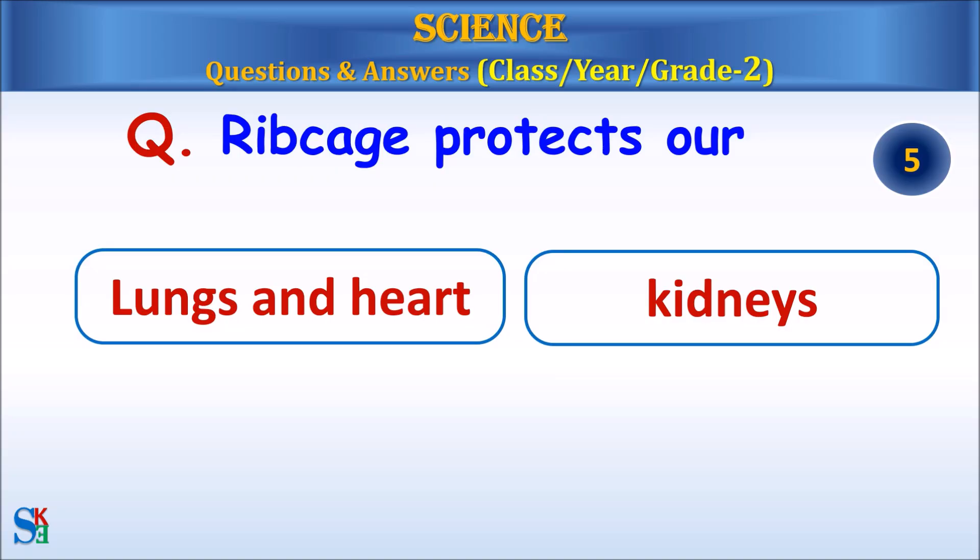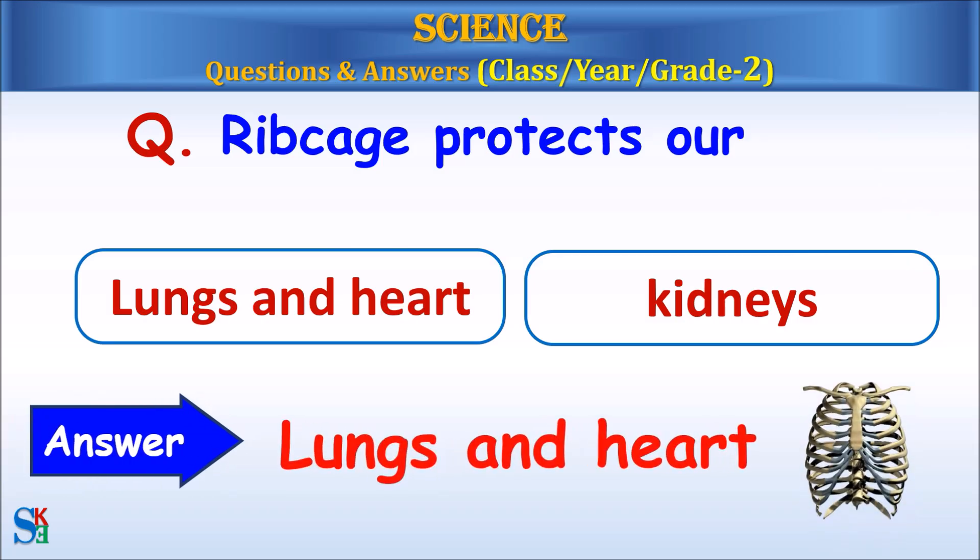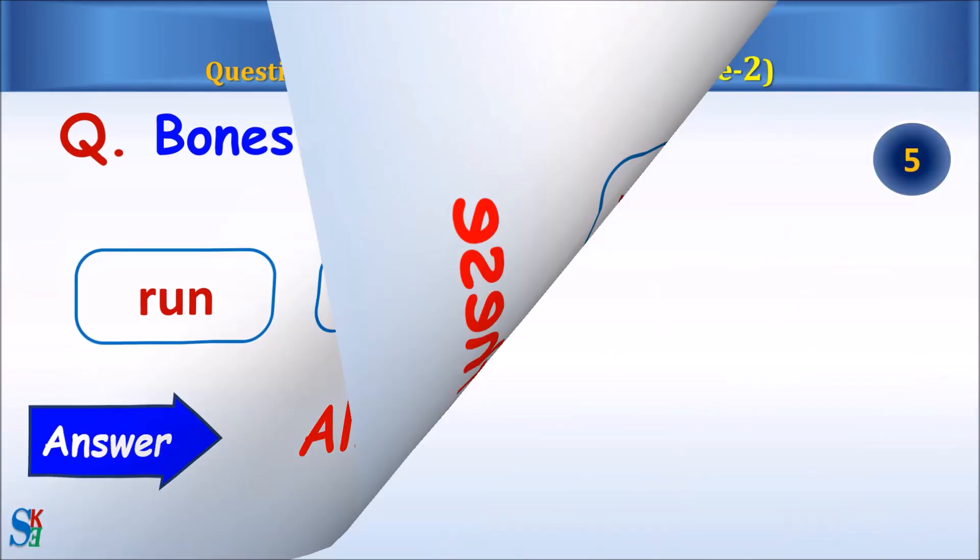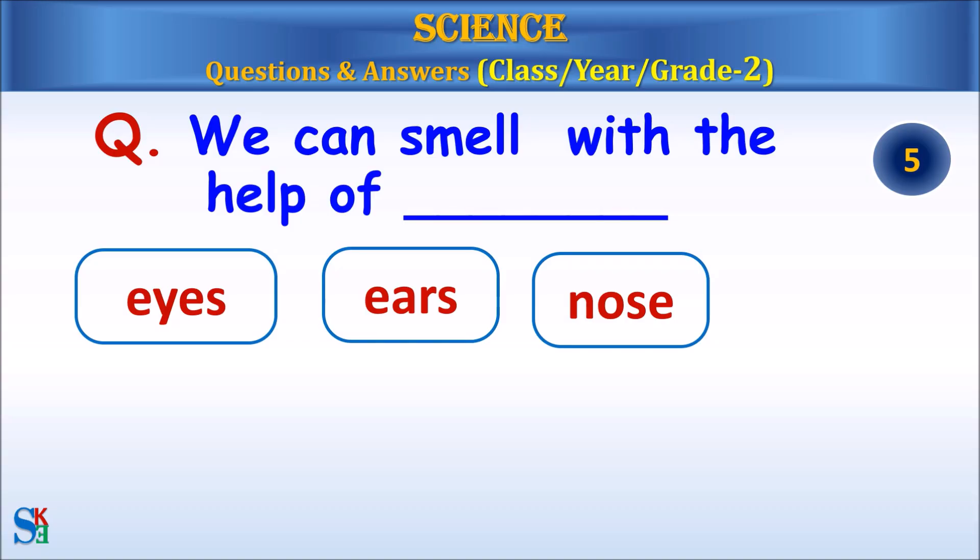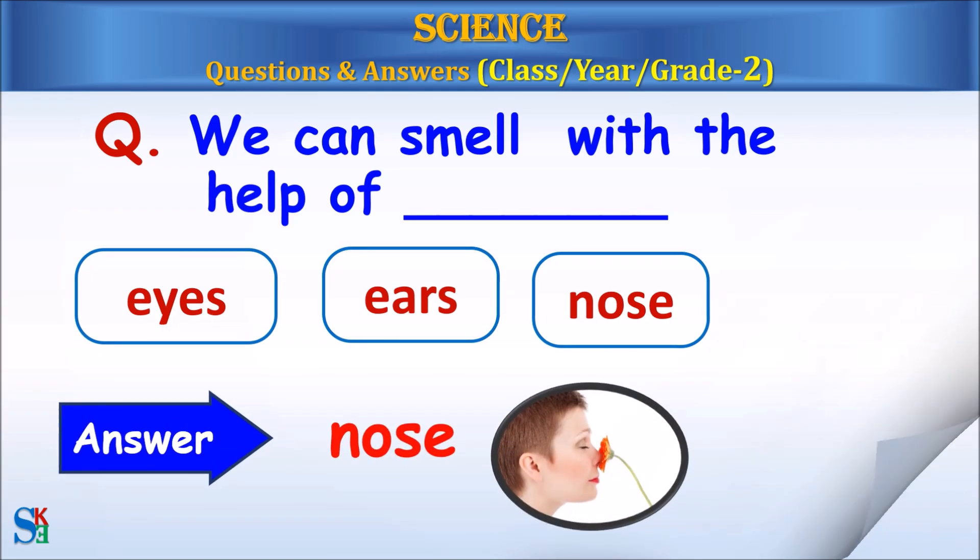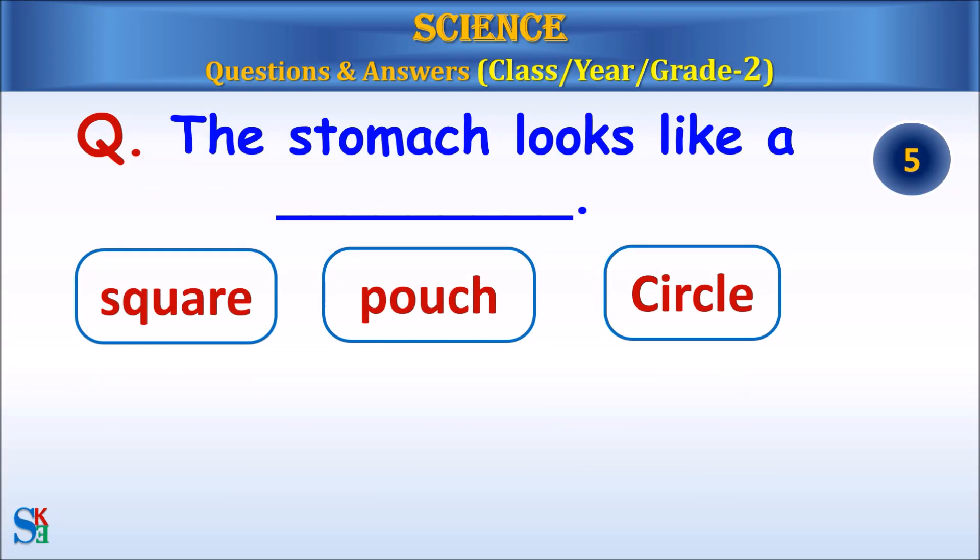Rib cage protects our lungs and heart or kidneys. Answer, lungs and heart. Bones and muscles help us to run, swim or walk. Answer, all of these. We can smell with the help of eyes, ears or nose. Answer, nose. The stomach looks like a square, pouch or circle. Answer, pouch.